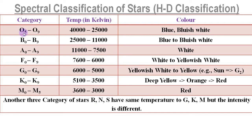That means there is a provision: if a star with temperature higher than 40,000 Kelvin is discovered, then O4, O3, and up to O0 category stars can be introduced. Now, the A category stars have temperature 11,000 Kelvin to 7,500 Kelvin, and the color of these stars is white.